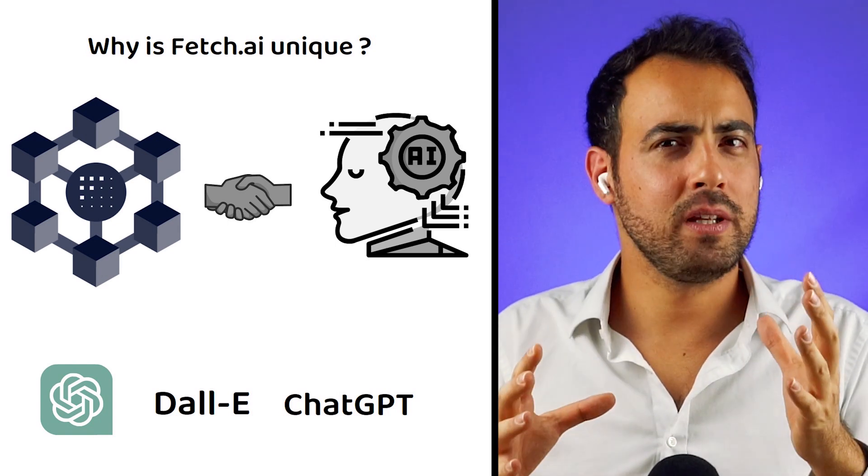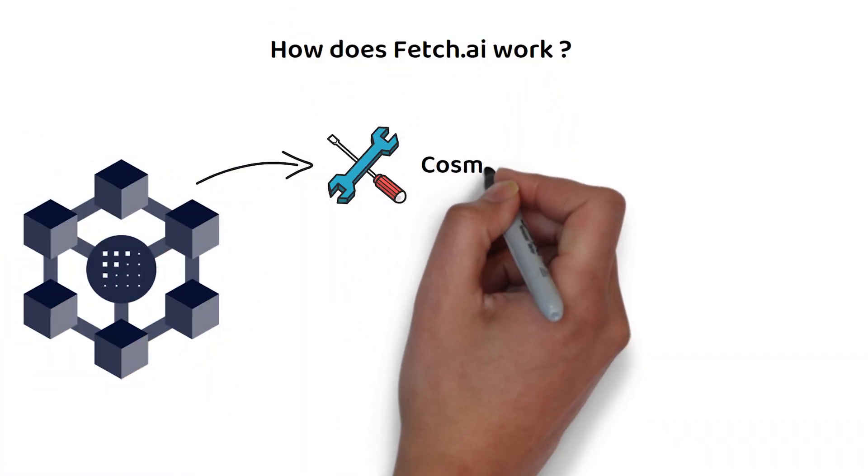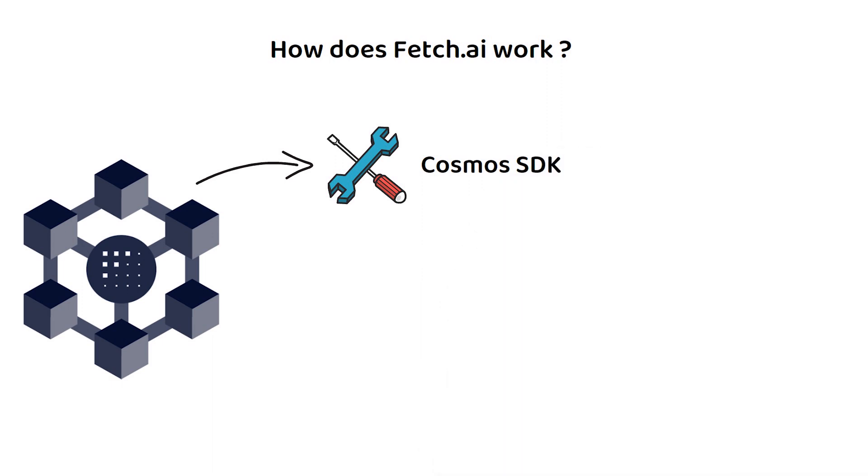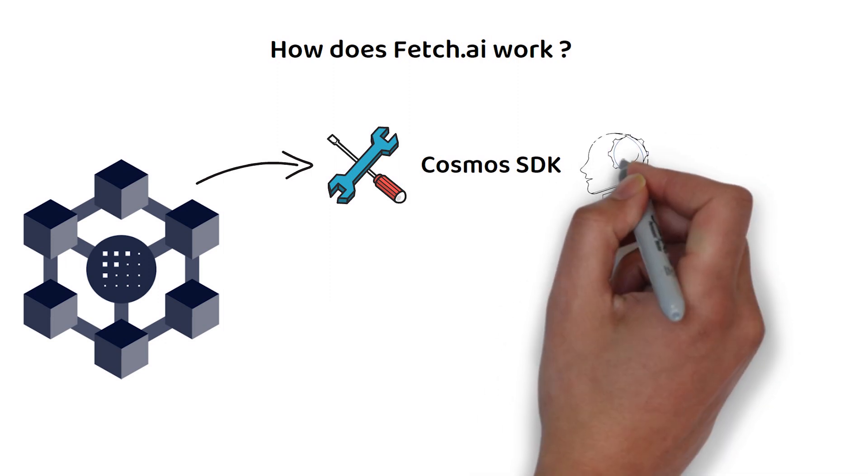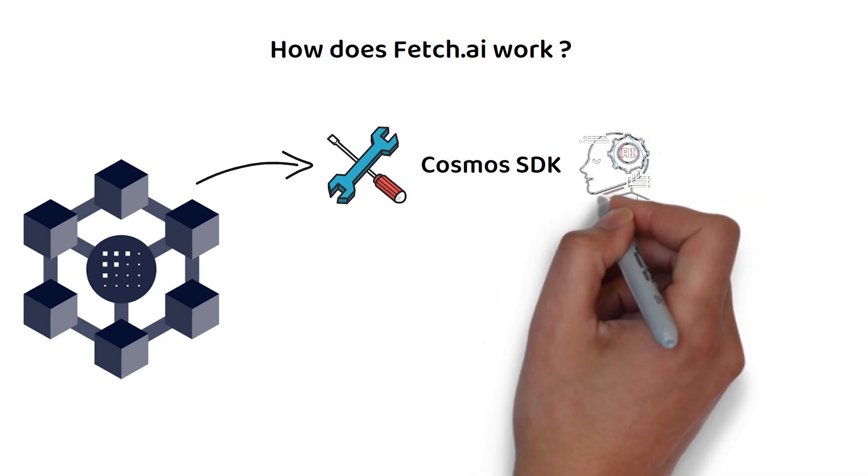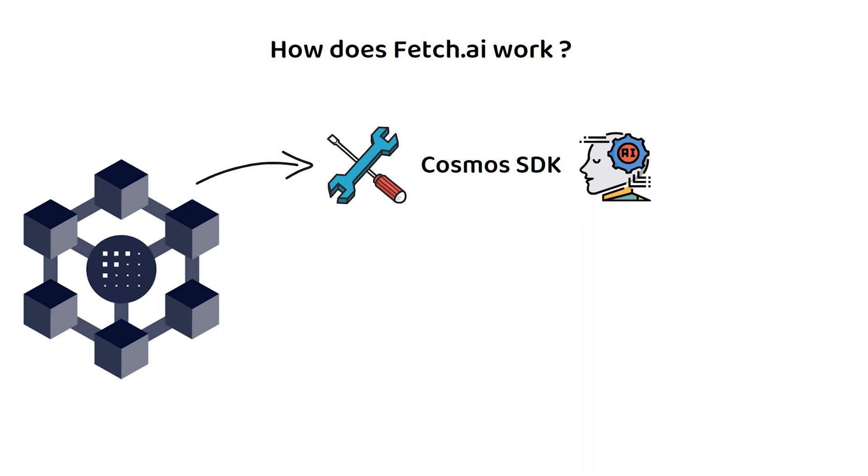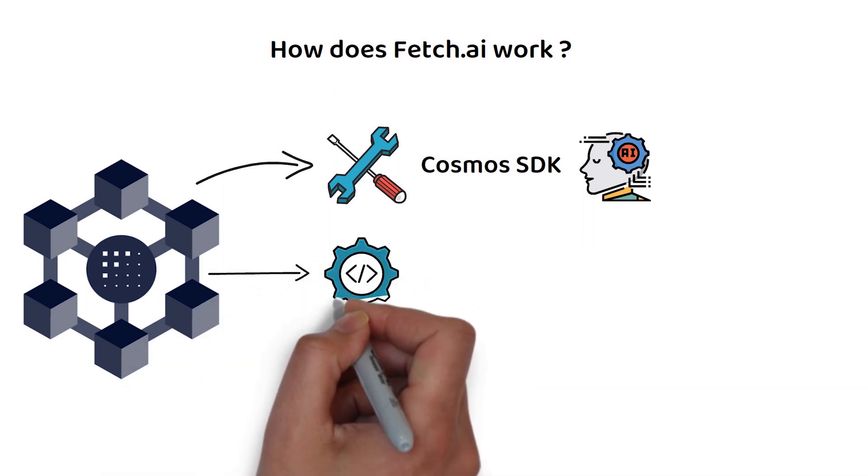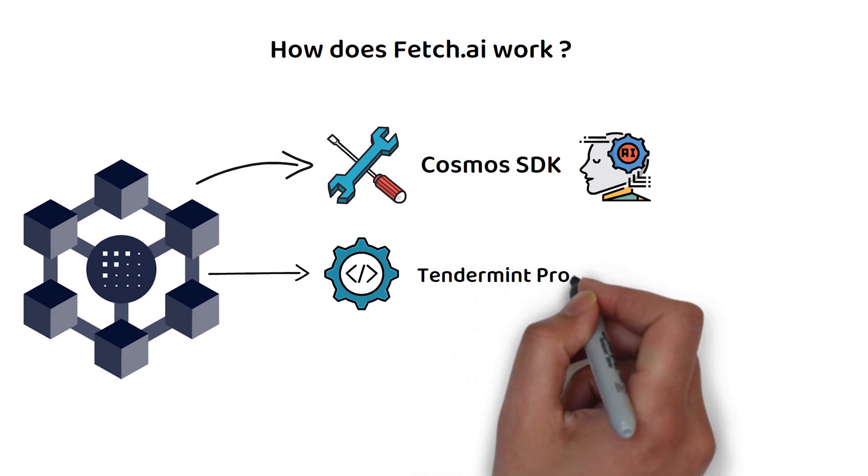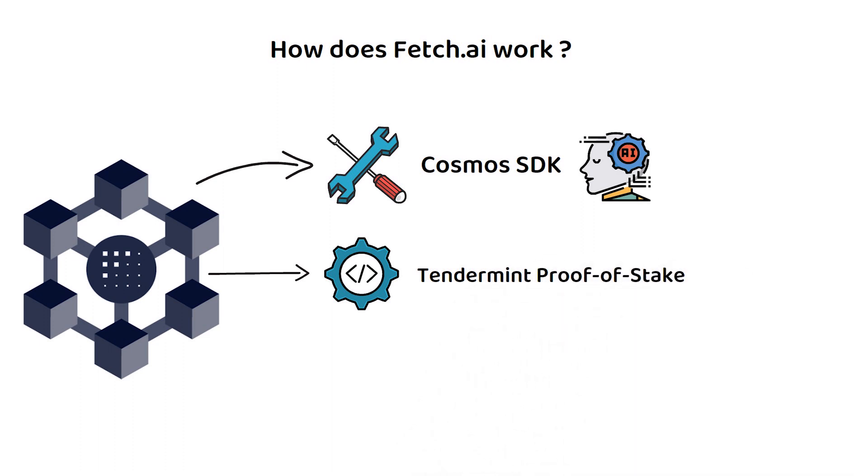But how does Fetch.ai work exactly? Fetch.ai is built using the Cosmos Software Development Kit. However, unlike most Cosmos SDK blockchains, Fetch.ai runs a modified version to allow integration of its AI components. Currently, Fetch.ai runs a modified version of Cosmos's Tendermint Proof-of-Stake Consensus Mechanism to verify its transactions.